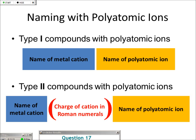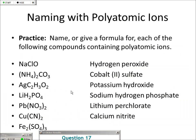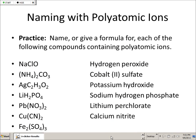Sulfate has a minus 2 charge, so it takes two sodiums to balance that — it should be sodium sulfate with two sodiums. If it's something like iron sulfate, I need more information, because iron could be iron 2 or iron 3. So I need to know what's going on with that — they need to give me more information.